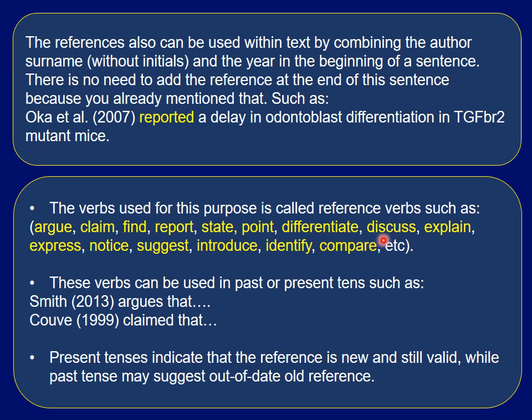Reference verbs include: argue, claim, find, report, state, point, differentiate, discuss, explain, express, notice, suggest, introduce, identify, compare, and others. The verb you choose depends on what the author did in their work. For example: if they made an argument, you write 'Somebody et al. (year) argued that...'; if they gave a claim, 'Somebody et al. (year) claimed that...'; if they found something, 'Somebody et al. (year) found that...'